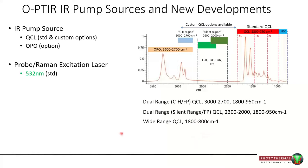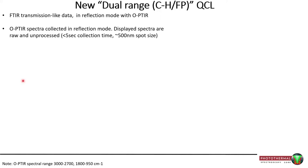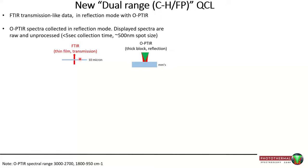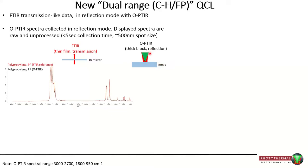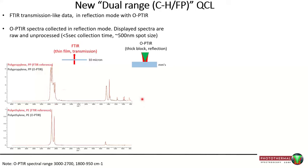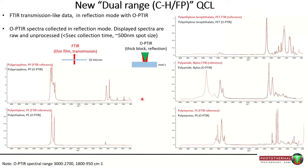The probe beam also doubles as the Raman excitation laser — you can opt for 532 nm or 785 nm. It's important to appreciate that OPTIR spectra are very much compatible and comparable to decades of FTIR history and libraries. Comparing transmission FTIR library spectra of thin films against OPTIR spectra of thick blocks measured in reflection mode, examples including polypropylene, polyethylene, PET, nylon, and polystyrene show a spot-on match. These spectra are raw — no treatment or transformation — exactly what you see on the screen.